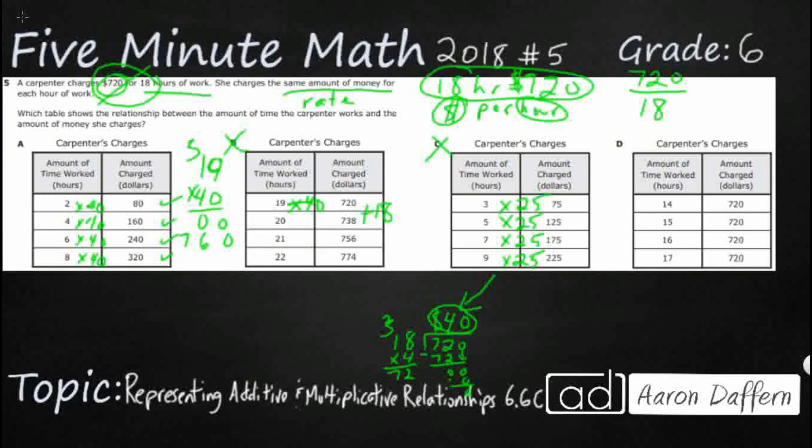And then D. Now D is funny. Look at this. The amount of money she charges stays at $720. So that's good. But look at your hours here. She charges the exact same amount for 14 hours, 15 hours, 16 hours, and 17 hours. That's not how it works. The more you work, the more you get paid. So first off, none of these hit $720. And then secondly, you don't keep your rates the same, or at least the amount charged the same as your time goes up. So that's not going to work.